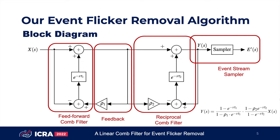Our model includes four main parts. We use both delayed feed-forward and a feedback loop to design a linear filter that strongly attenuates all harmonics of a base frequency. A reciprocal comb filter is added at a much higher base frequency to preserve the DC signal.